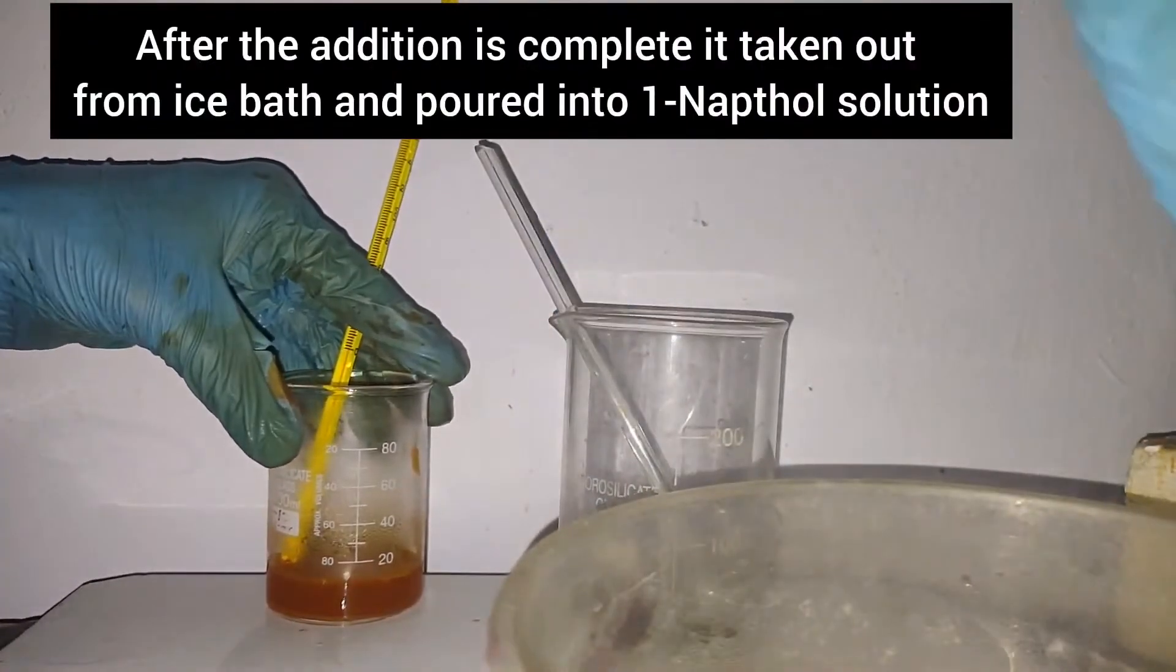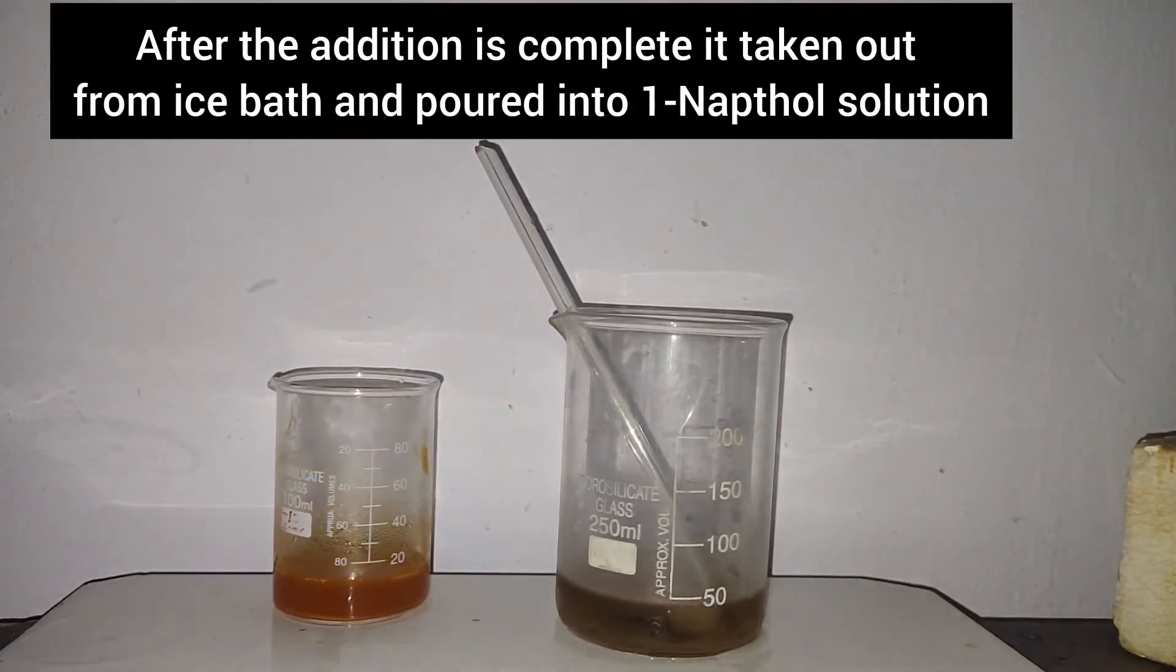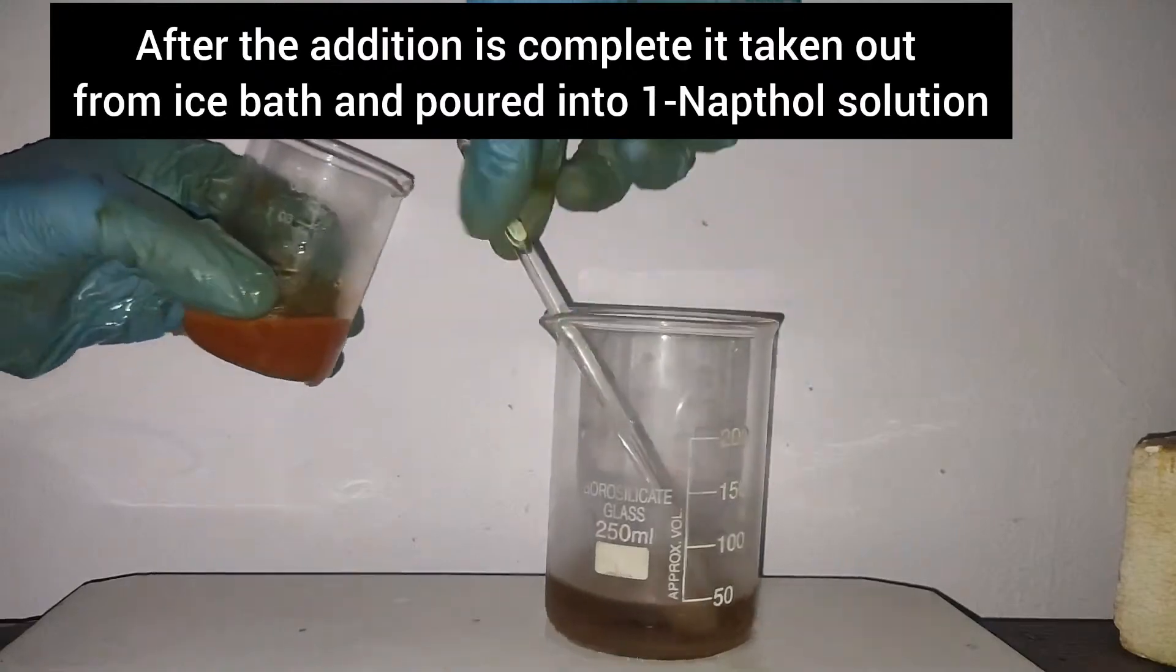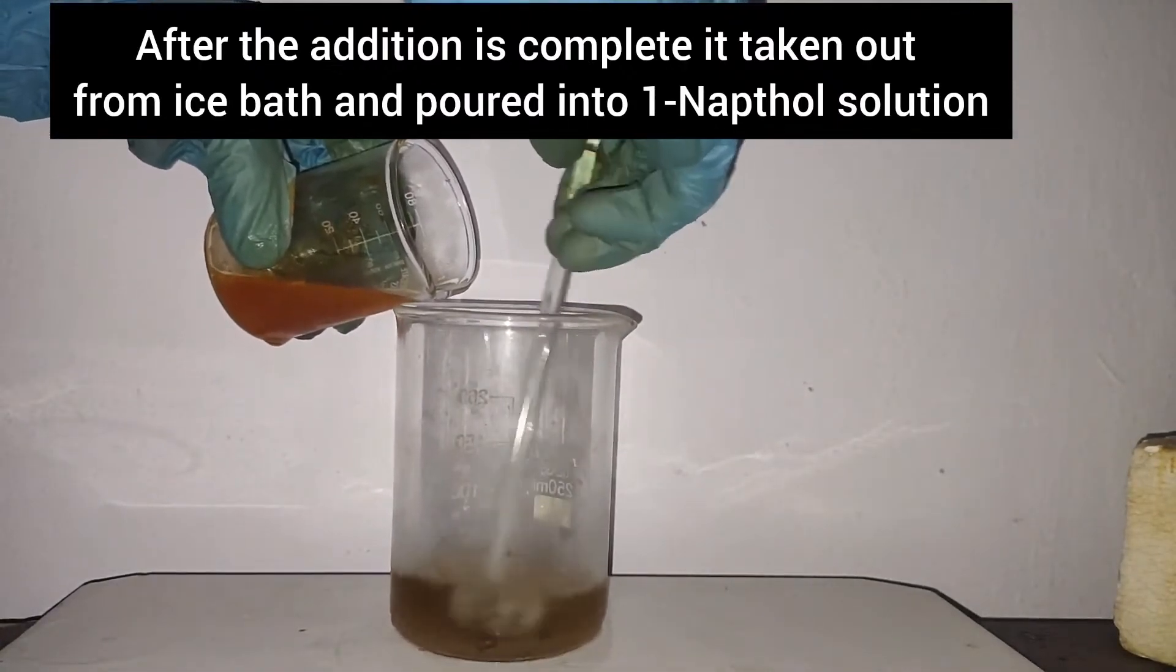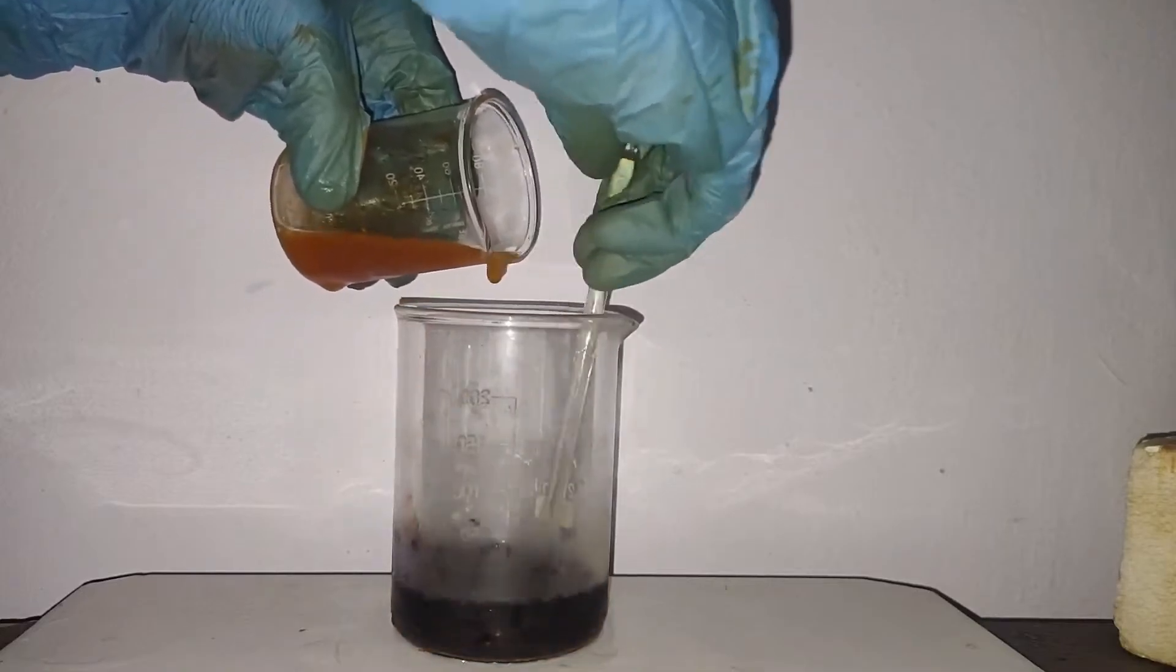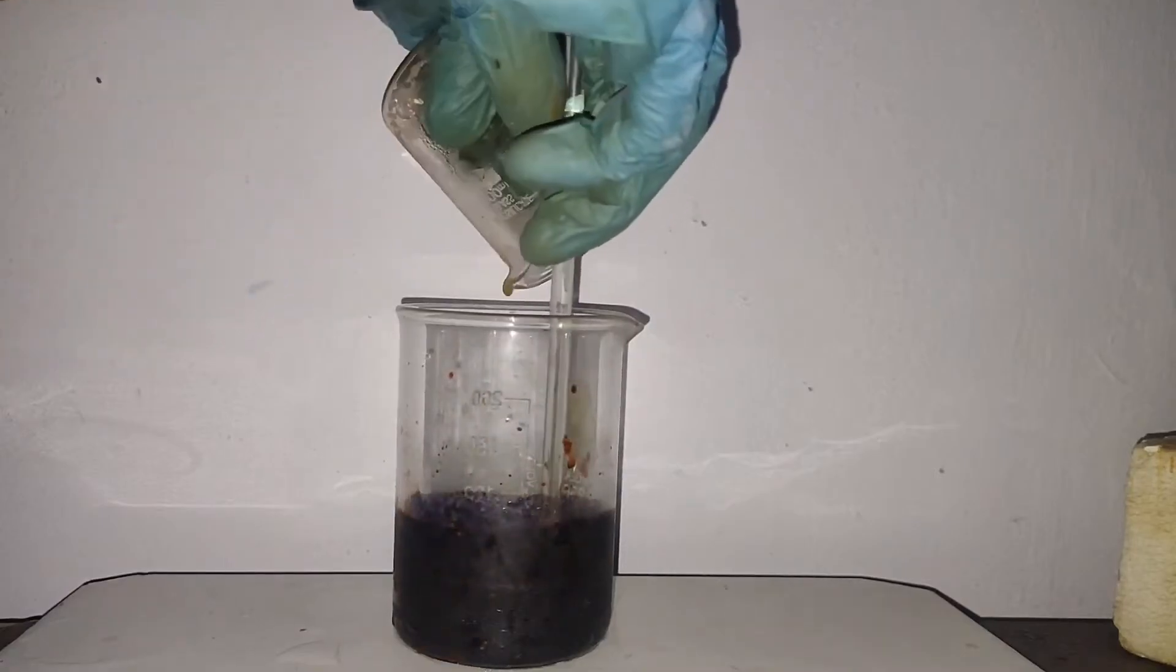When all the addition was complete, the contents were taken out of the ice bath. The diazonium salt solution was poured into the 1-naphthol solution. It reacts with 1-naphthol to form the dye called Magneson 2.